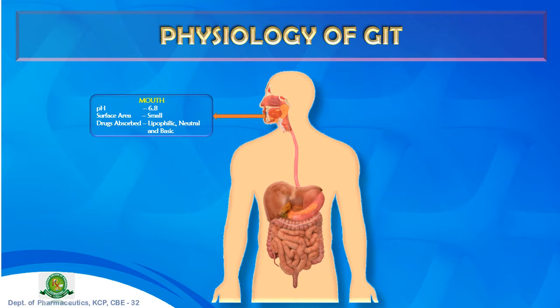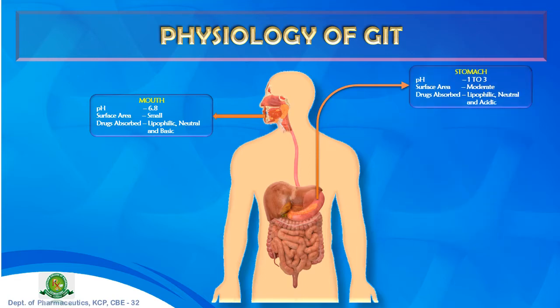Once content is swallowed and reaches the stomach, it undergoes first-pass metabolism. The stomach pH varies from 1 to 3 — lower when empty, rising toward 3 when food is present. The surface area is moderate compared to lower GIT regions. Lipophilic, neutral, and acidic drugs absorb here, though absorption is less than in the intestine.